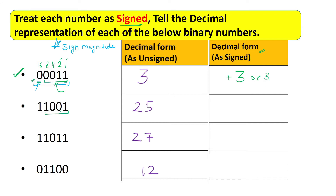For the second number, the last bit is 1, meaning negative. The magnitude from the remaining bits is 1, 2, 4, 8 — giving 8 plus 1 = 9. So this is minus 9 when treated as a signed number. For the third number, the last bit is again 1, so it is negative. The magnitude bits give 8 plus 2 plus 1 = 11. So this number is minus 11.